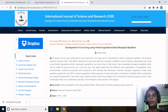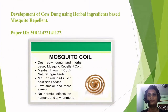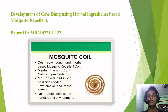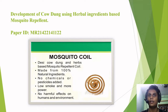Recently my article got published in the International Journal of Science and Research. The title of my research article is 'Development of Cow Dung Using Herbal Ingredients with Mosquito Repellent' and its paper ID is MR2142141122. I used this study to make a mosquito repellent that is biosynthesized using herbal ingredients for the development of cow dung, making a mosquito repellent with 100% natural ingredients. No chemicals or pesticides are used, and less smoke will come out. These are the key features of this study.